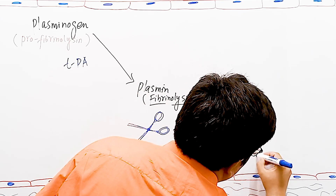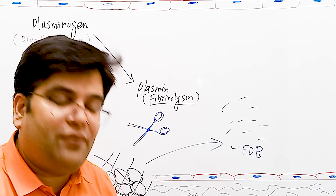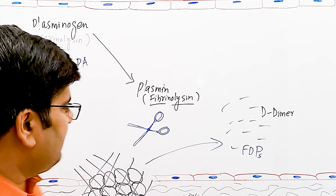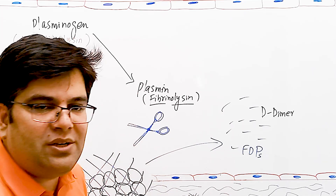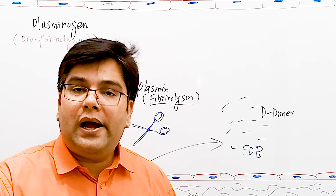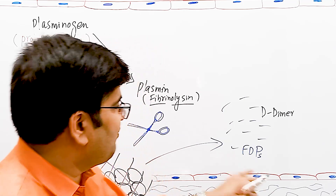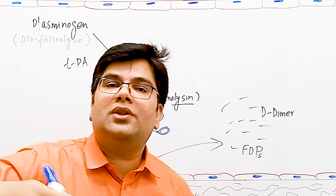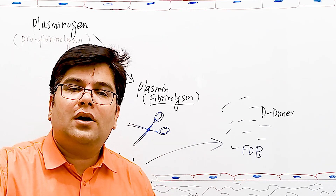These small products are called fibrin degradation products (FDPs). One very important product formed from the breakdown of fibrin is called D-dimer. Plasmin converts the fibrin clot into its degradation products, and these are removed by other cells like WBCs. The liver especially plays a very important role in clearing fibrin degradation products, and some products are cleared through the kidney.